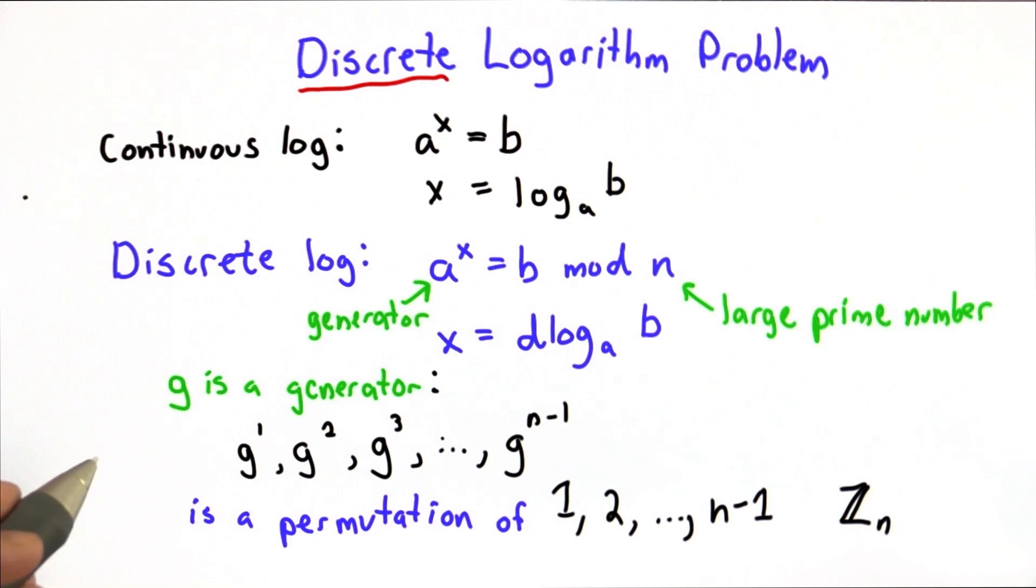You can do a little better than that by trying powers in a clever way, and you can exclude some of the powers more quickly, but you can't do any better than doing this exponential search, which is exponential in the size of n.